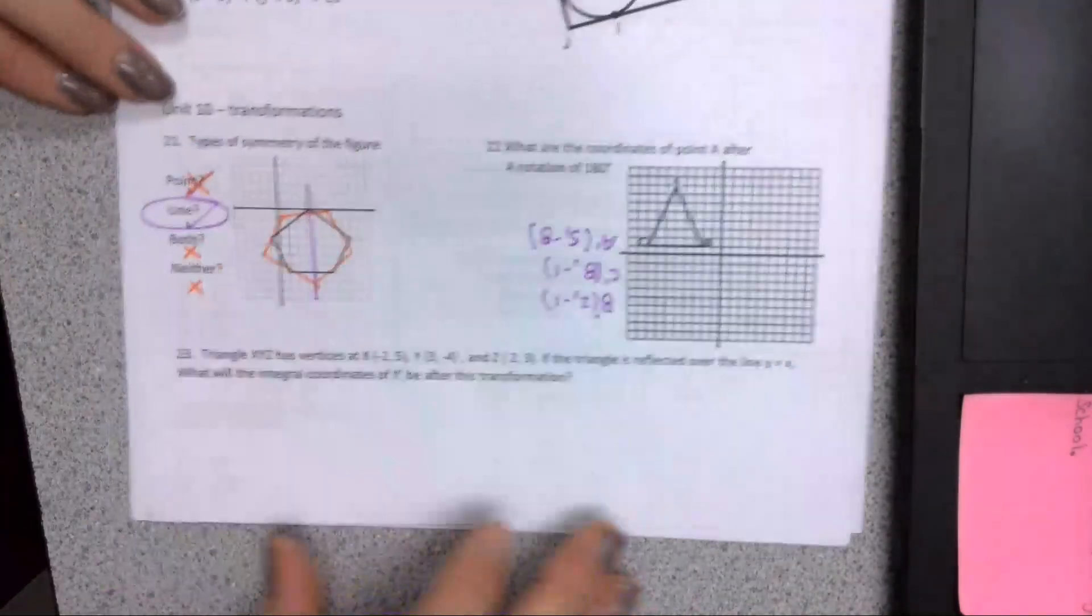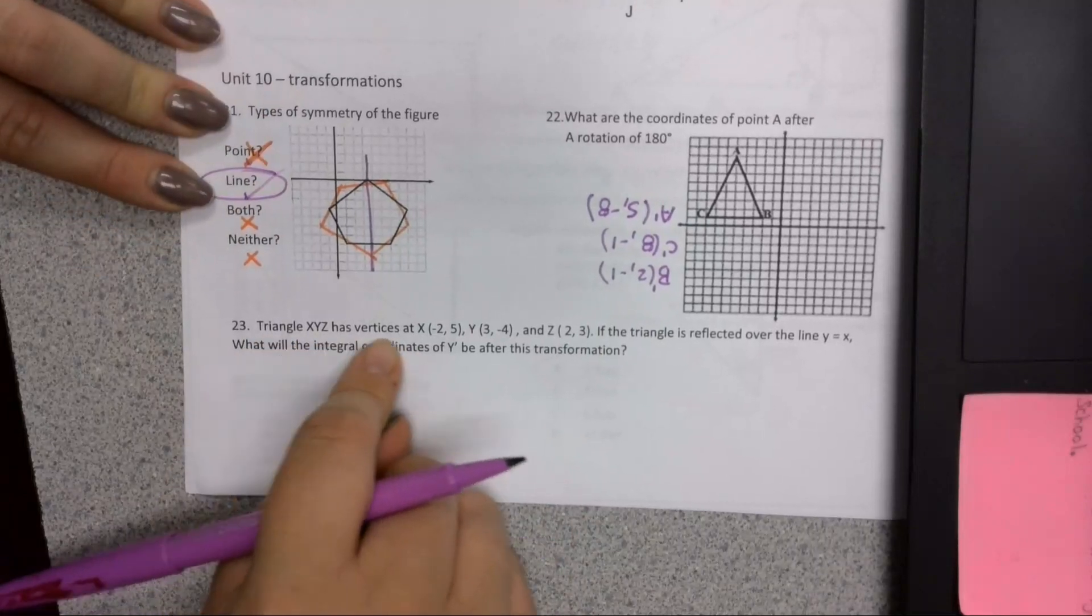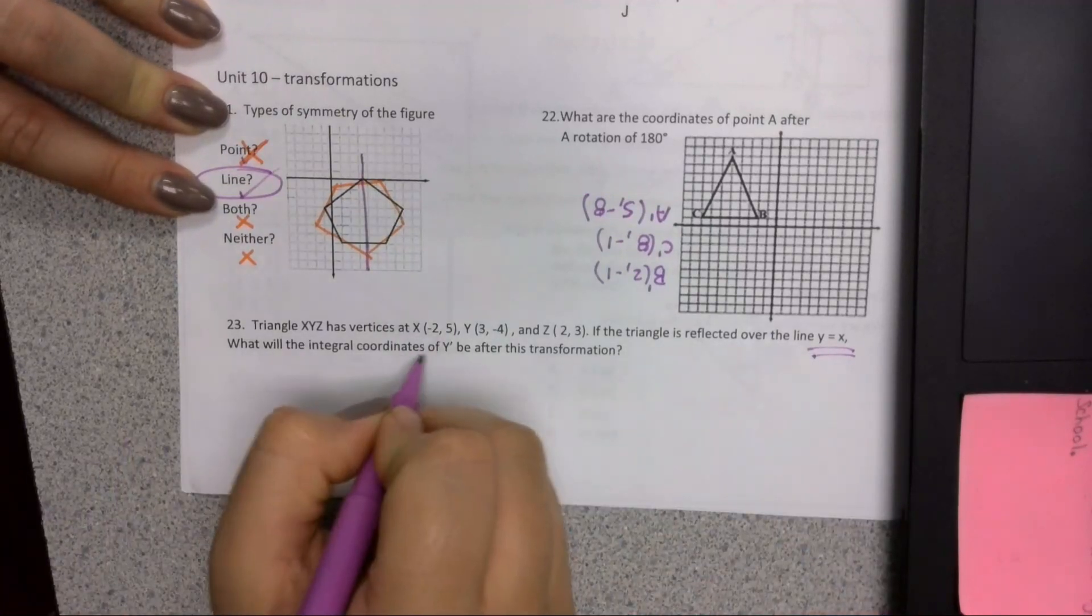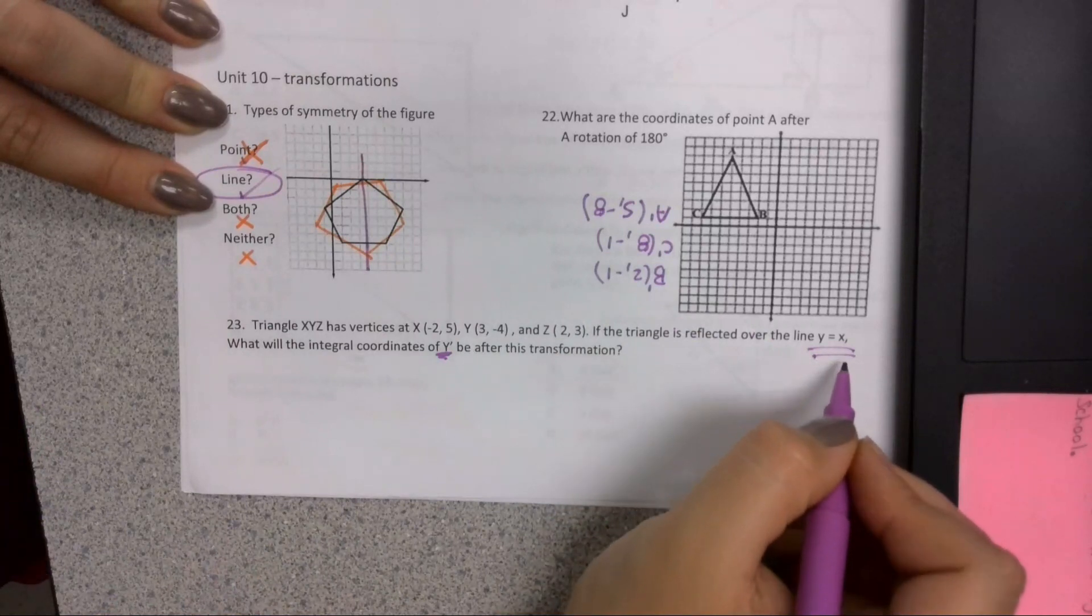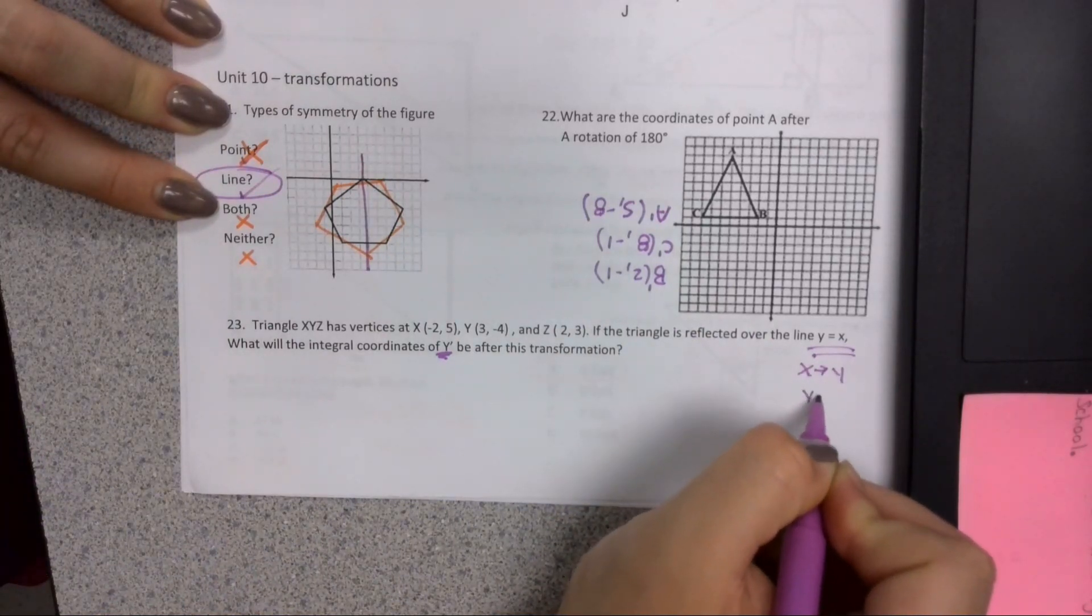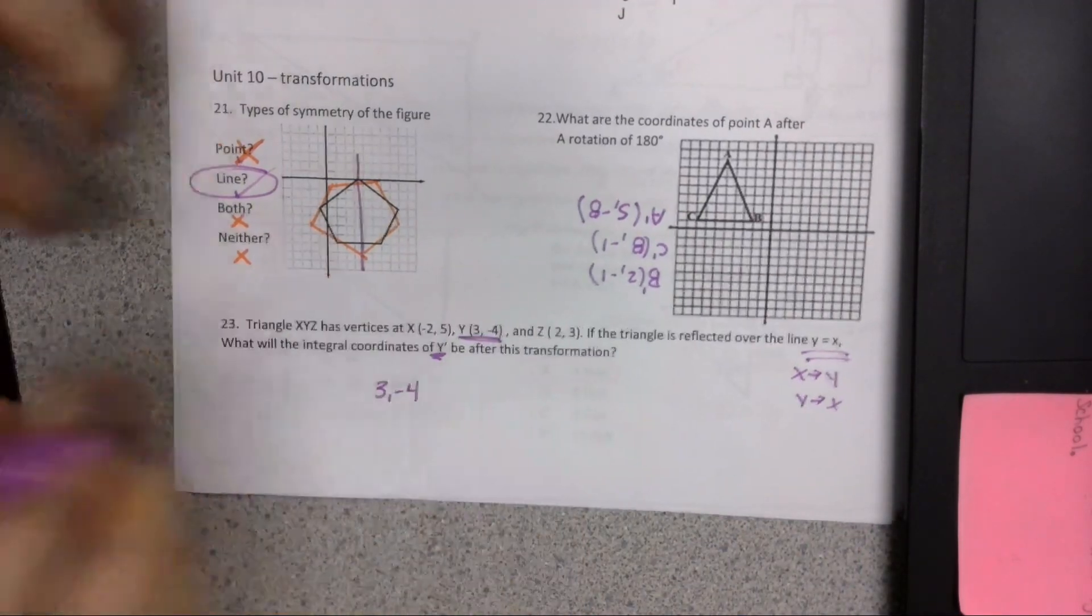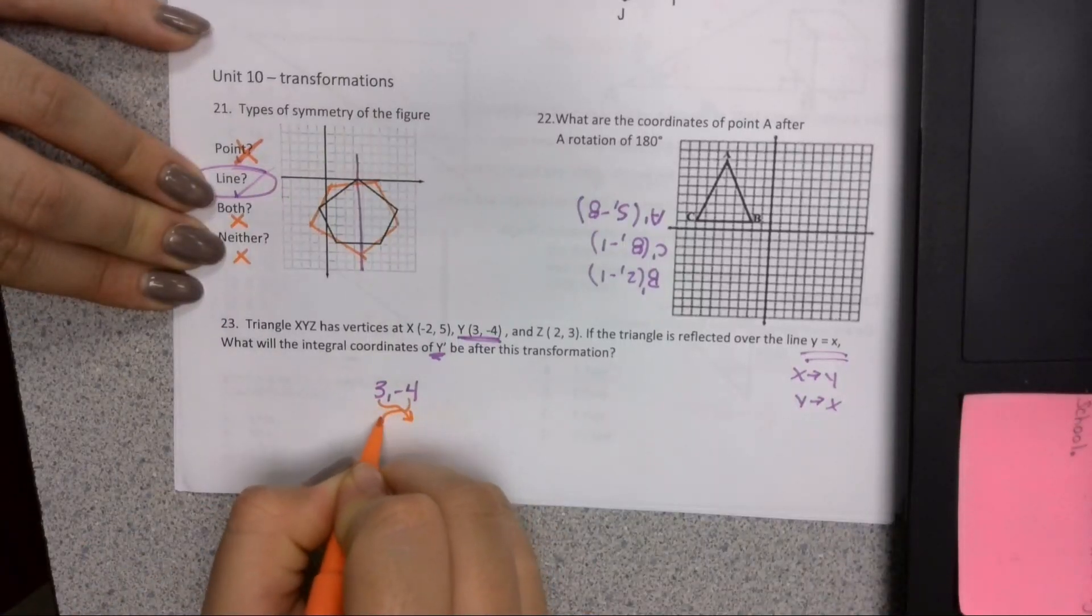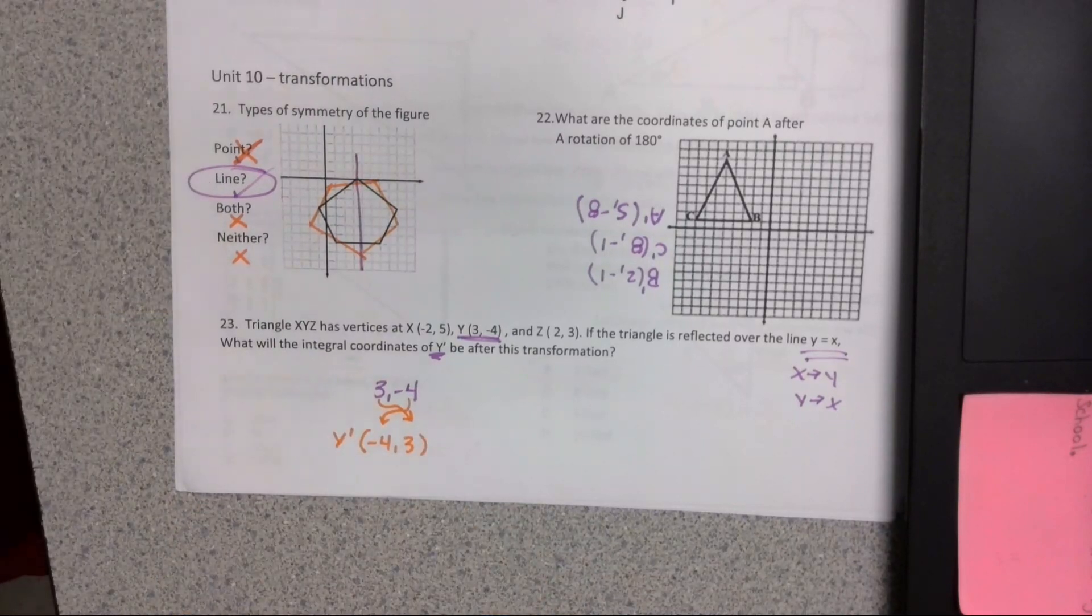Last but not least, we're talking about our reflection for this is reflected over the line Y equals X. And we're only really worried about Y. Now remember, for my rule Y equals X, my X's become Y's and my Y's become X's. So if we look at point Y, all I'm going to do is switch my X's and my Y's. So my new point, Y prime, is going to be negative 4, 3.